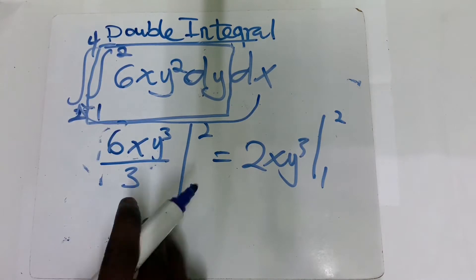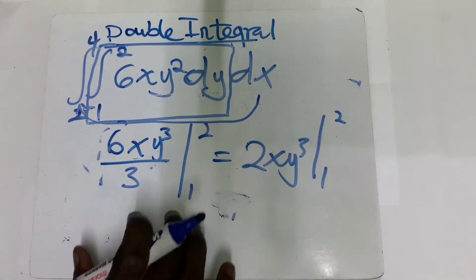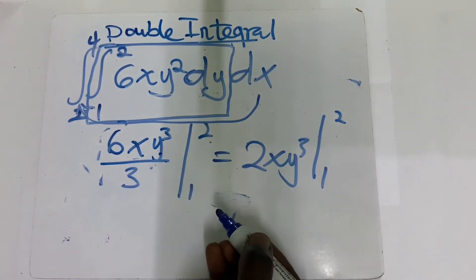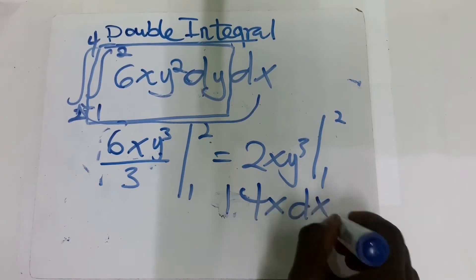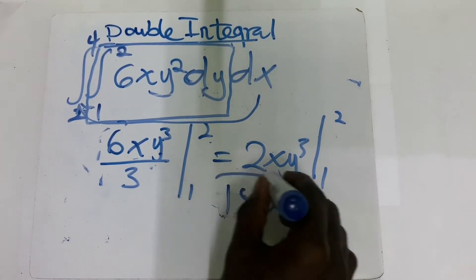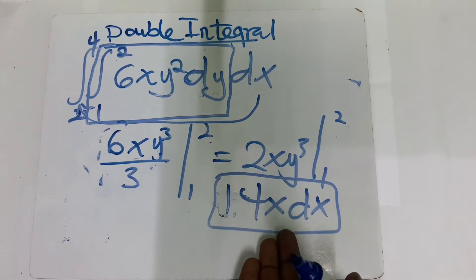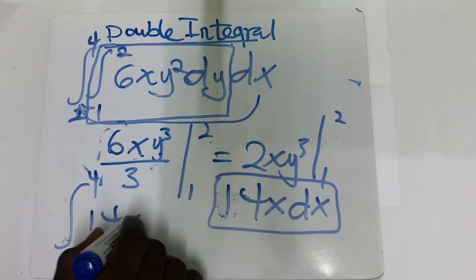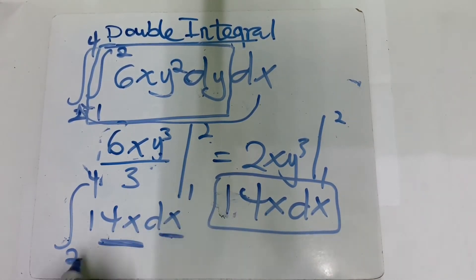When you evaluate from 1 to 2, the whole idea was that we didn't integrate the x, so at the end we should get an expression in x. When you do that correctly, you get 14x dx. So you now take the integral from 2 to 4 of 14x dx, then integrate with respect to x and put the values inside.